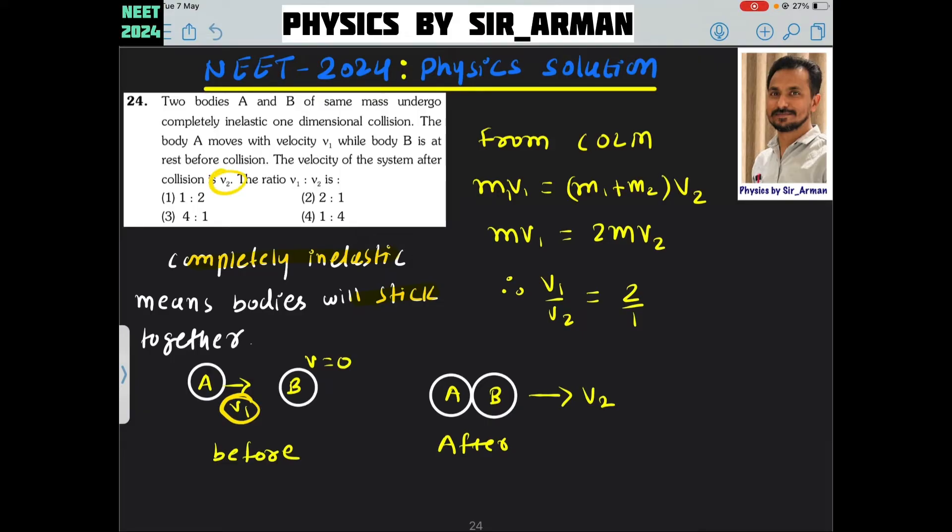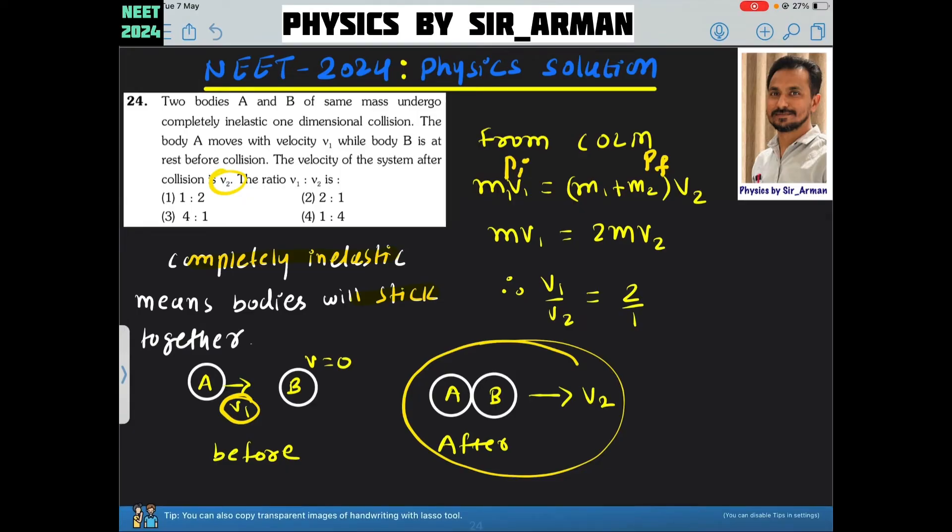From the conservation of linear momentum, initial momentum of the system is M1V1. Final momentum, they stick together, right? So their combined mass will be M1 plus M2.